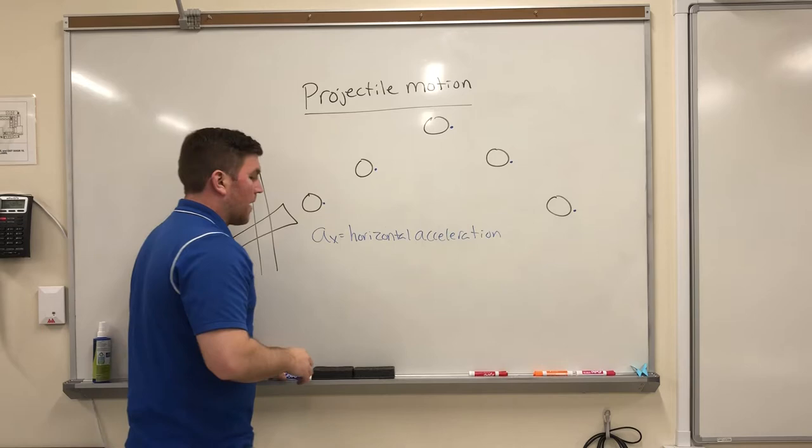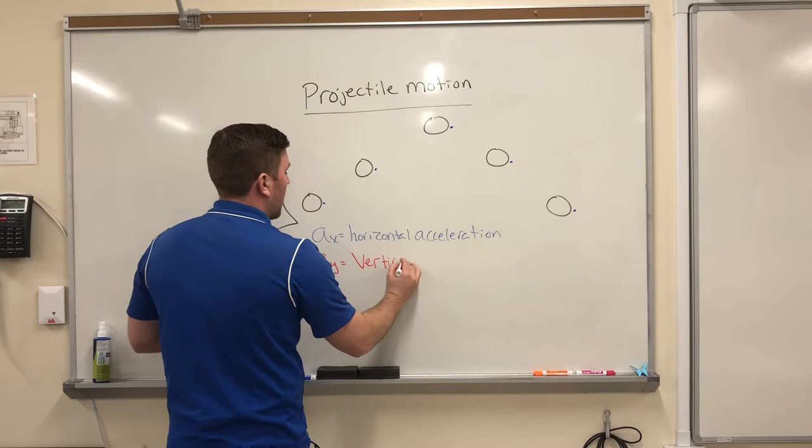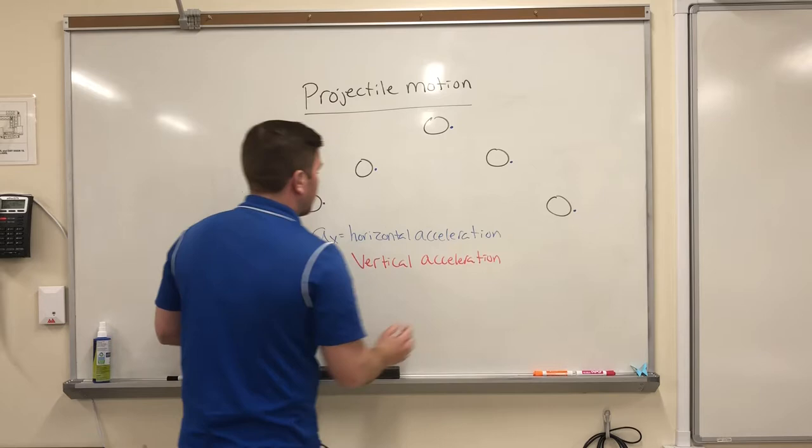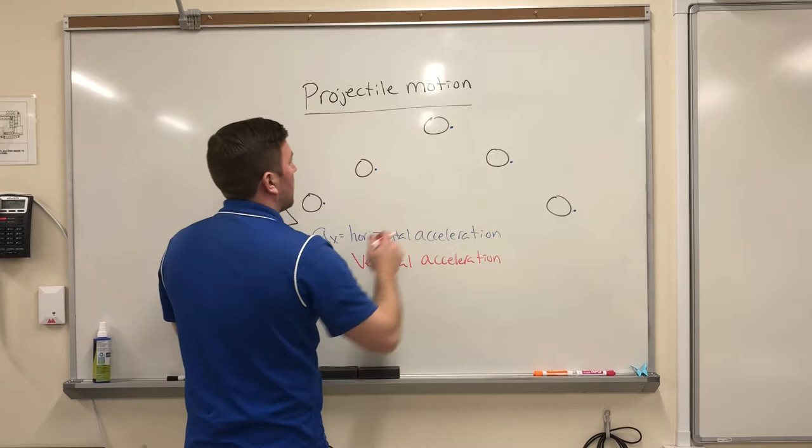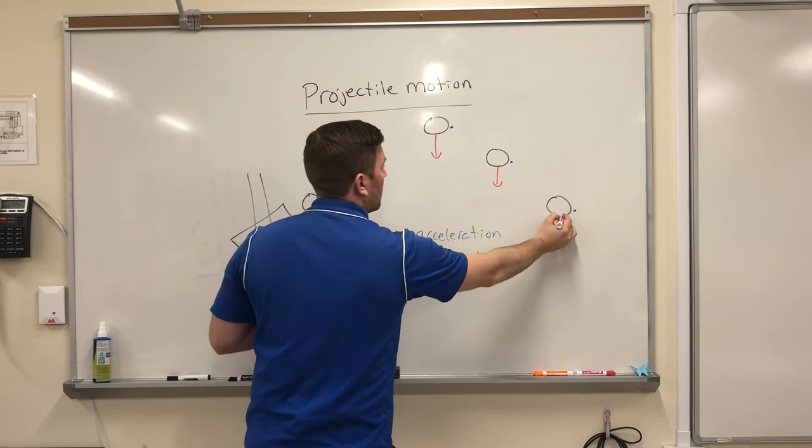So as it moves through the air, it's not accelerating, it's not speeding up or slowing down in the horizontal direction. The other direction that we could have acceleration would be the vertical or the Y direction. And so in the vertical direction, there is acceleration. It is changing speed all the time vertically. It initially is going up, but as you can see, it's slowing down and then it's gonna start gaining speed downward.